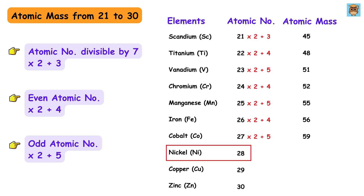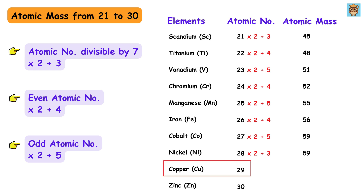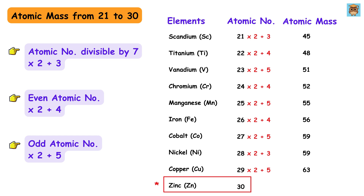Nickel has atomic number 28, which is divisible by 7, so 28 times 2 is 56 plus 3, giving us 59. Copper has atomic number 29, which is odd, so 29 times 2 is 58 plus 5, giving us 63. Zinc is an exception and we cannot apply this trick here — its atomic mass is 65.